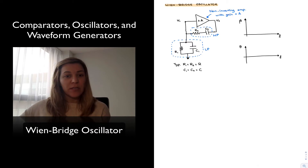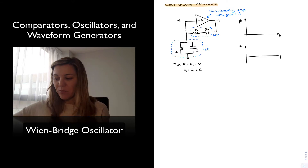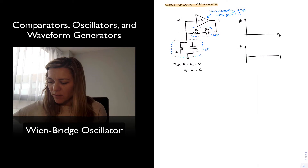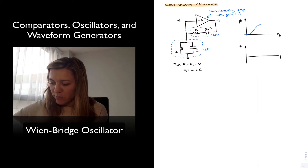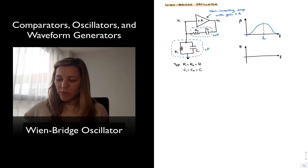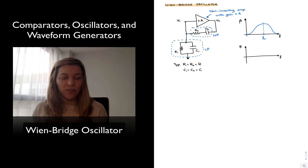What ends up happening is that the amplitude of the circuit will start at zero for very low frequencies, then increase just like that of a bandpass filter, and then decrease again, reaching a maximum value at the circuit's resonant frequency. That will be the magnitude of beta, which is the feedback factor or the gain of the feedback network.